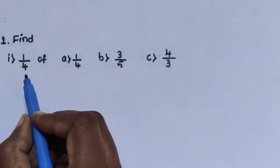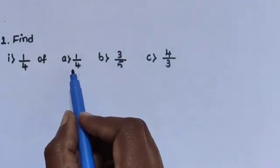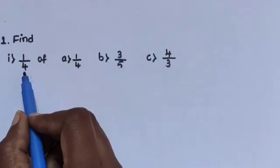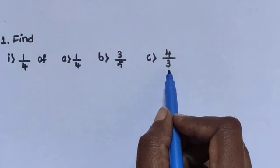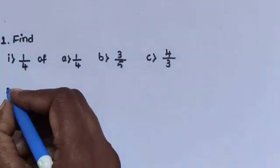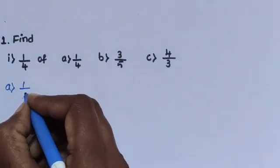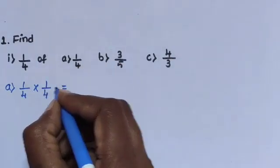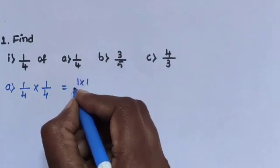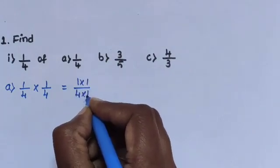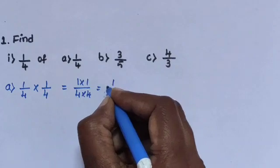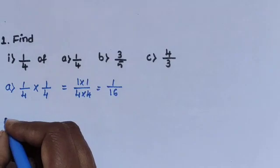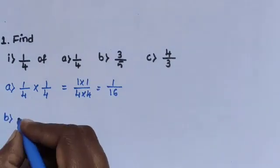Question 1: 1/4 is multiplied by question A. 1/4 multiplied by 1/4 equals 1×1 divided by 4×4. 1 ones are 1, divided by 4 fours are 16. The answer is 1/16.